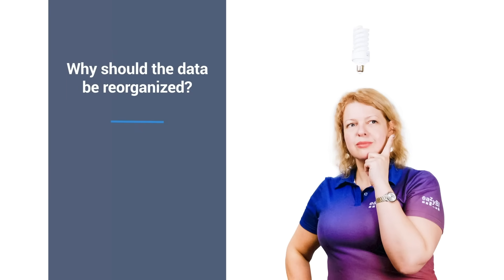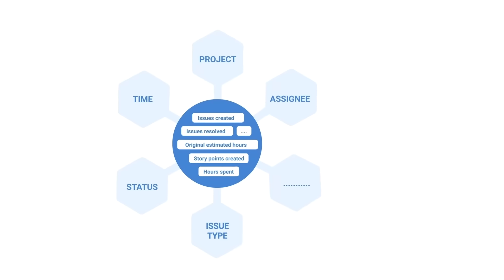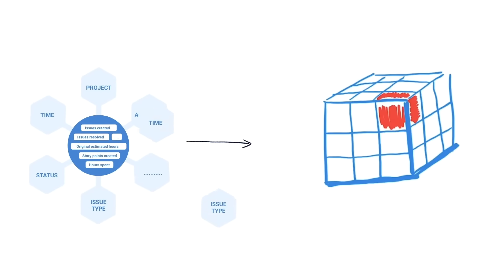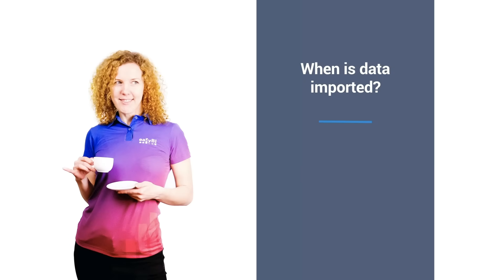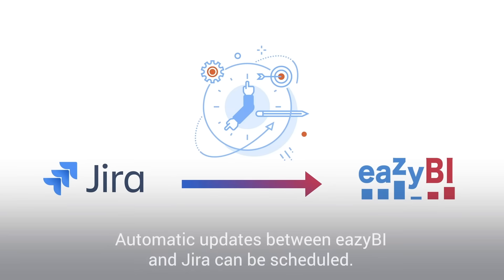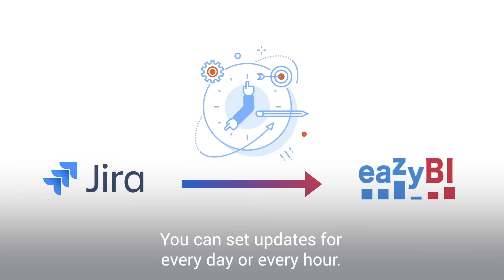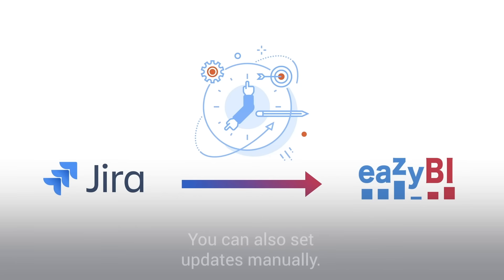Being able to separately pull dimensions and measures, EZBI allows you to analyze data that within Jira may not be related. This means you can answer questions such as how many hours have been logged for all stories within the last month. Once the initial data import is completed, automatic updates between EZBI and Jira can be scheduled — for example, once a day or even every hour. Manual data updates are always available too.